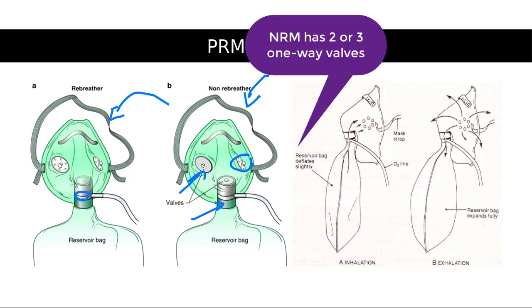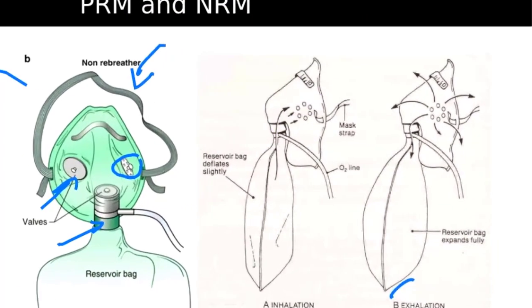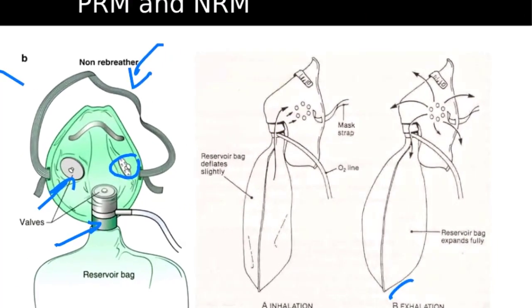When the patient exhales, right here, approximately the first third of expiration comes from the anatomic dead space. Remember now that this does not participate in gas exchange and therefore is rich in oxygen.